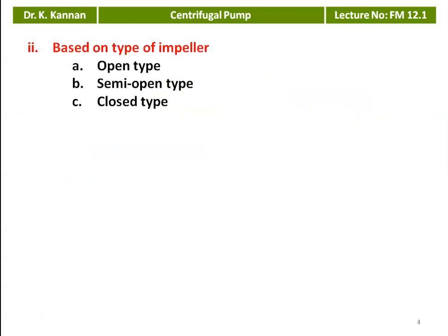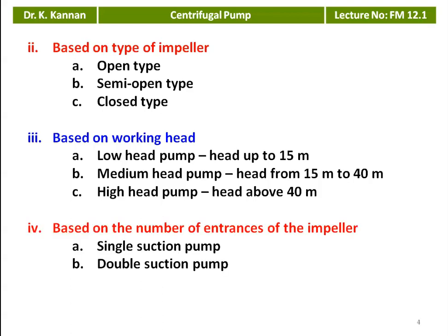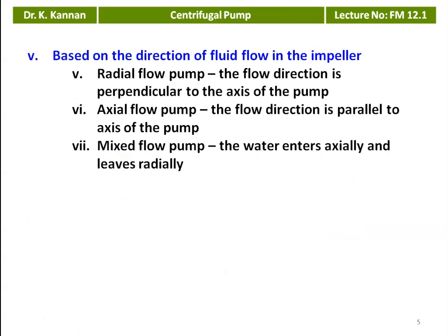Based on the type of impeller, it may be open type, semi-open type, or closed type impeller. Based on the working head: low head pump when the head is up to 15 meters, medium head pump when the head is 15 to 40 meters, and high head pump when the head is above 40 meters. Based on the number of entrances to the impeller: single suction pump or double suction pump. In the single suction pump, water is admitted only from one side; in the double suction pump, water is admitted from both sides. Based on the direction of fluid flow in the impeller: radial flow pump (flow perpendicular to the axis), axial flow pump (flow parallel to the axis), and mixed flow pump (water enters axially and leaves radially).